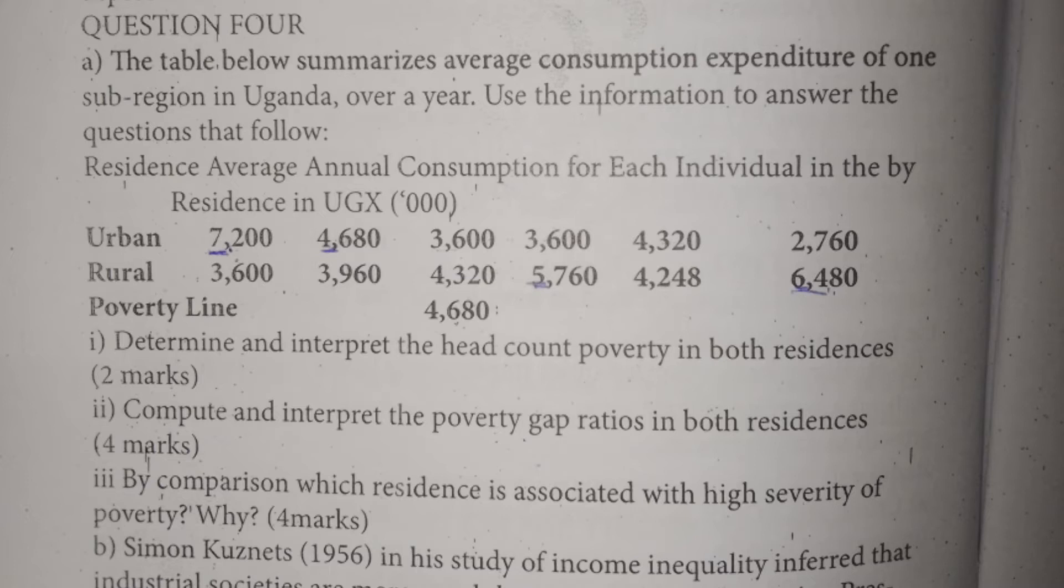They have given us the figures for individuals in the urban areas and their income, then the income of individuals in the rural areas, and the poverty line. The poverty line is 4680.